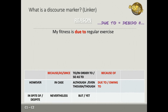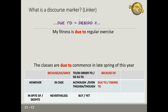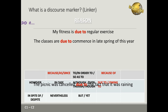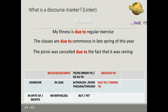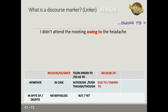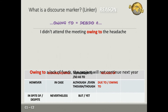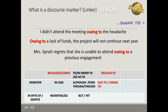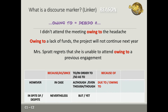Examples with 'due to': 'My fitness is due to regular exercise.' 'The classes are due to commence in late spring of this year.' 'The picnic was cancelled due to the fact that it was raining.' Examples with 'owing to': 'I didn't attend the meeting owing to the headache.' 'Owing to a lack of funds, the project will not continue next year.' 'Mrs. Pratt regrets that she is unable to attend owing to a previous engagement.'